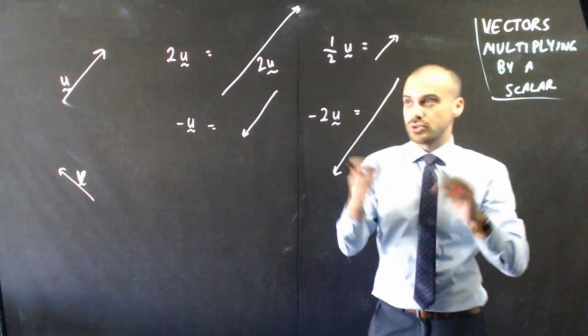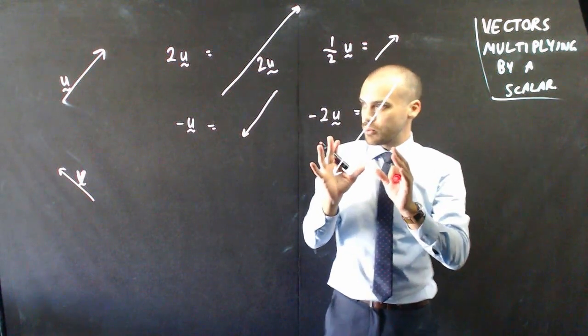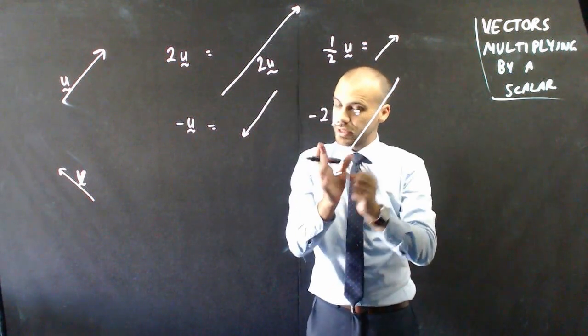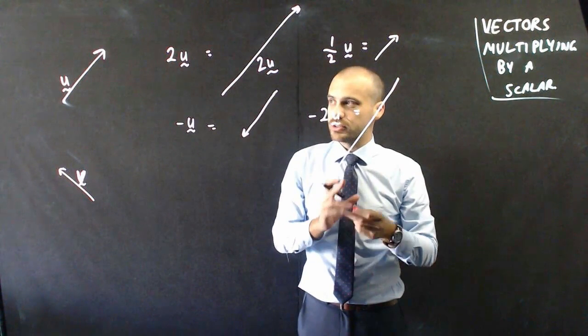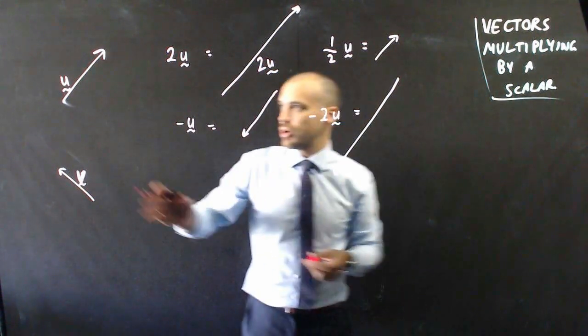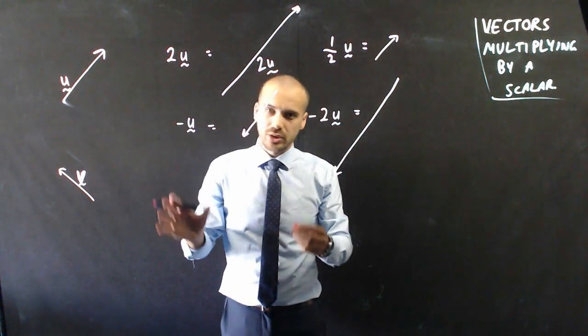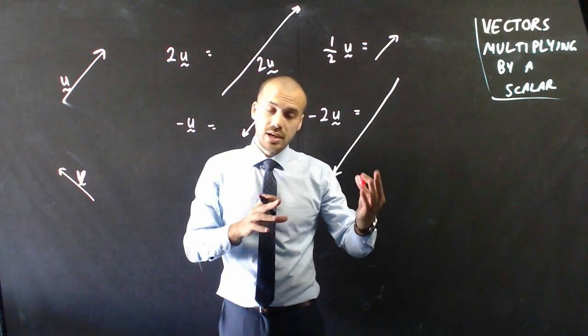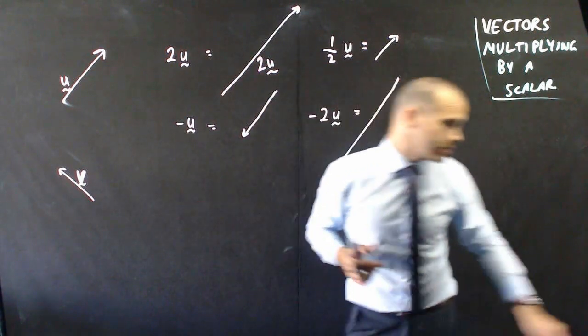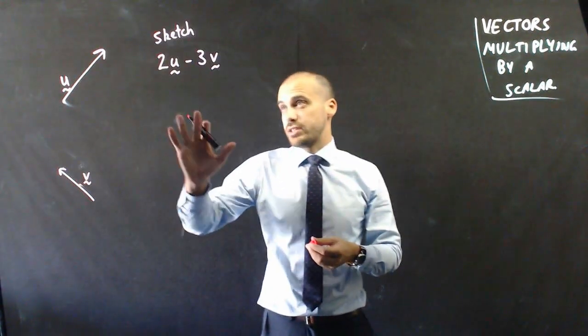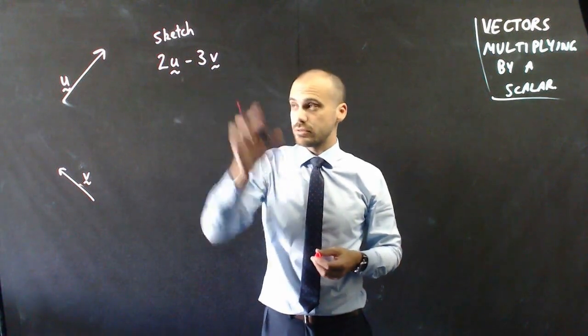And that's vector negative 2u. So, now that we've done that, I guess we could do one final step, which is combine u and v, combine our knowledge of addition of vectors, and also multiplication of vectors. So, now I'm going to sketch the vector 2u minus 3v.